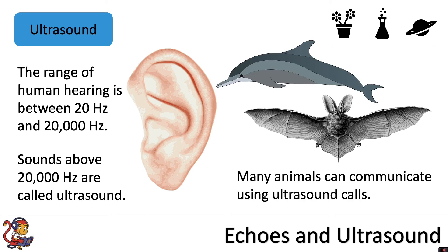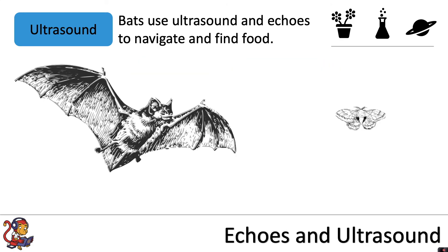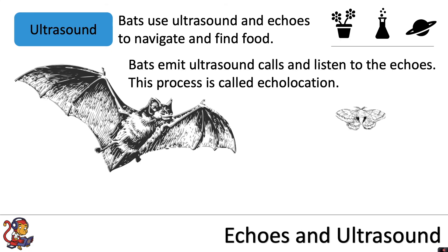Many animals can communicate using ultrasound calls. Bats use ultrasound and echoes to navigate and find their food. The bats emit—which means give out—ultrasound calls and listen to the echoes. This process is called echolocation.